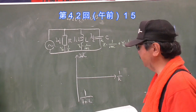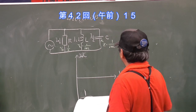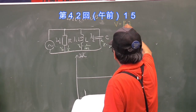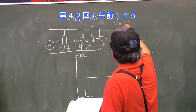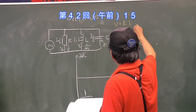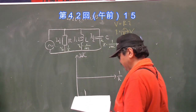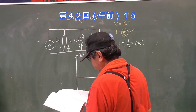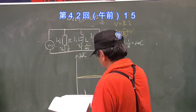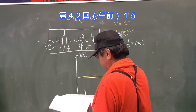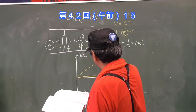インピーダンスだと横軸がRで、こちらがJωL、こちらがJωC分の1として考えましたが、アドミッタンスで考える場合はR分の1、こちらがJωC、こちらがJωL分の1です。逆数ですからね。そうした場合に電流はVイコールRIですよね。IイコールR分の1かけるVになります。このアドミッタンスに電圧をかけたものが電流になるということですね。流れる電流をIxとします。